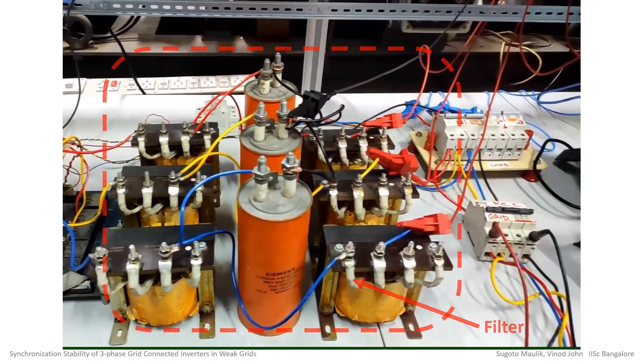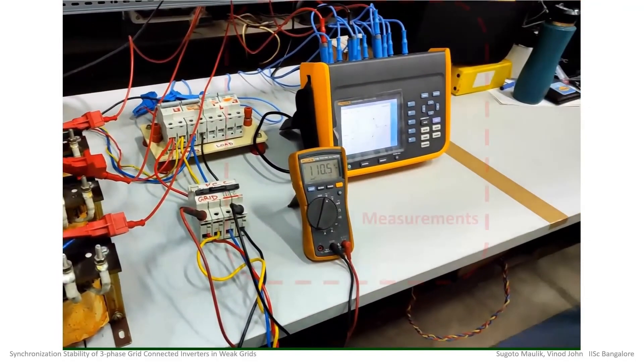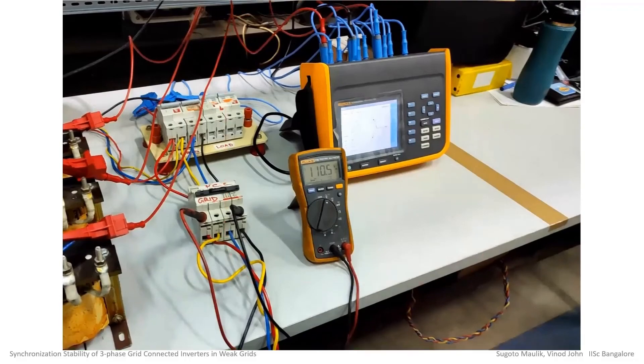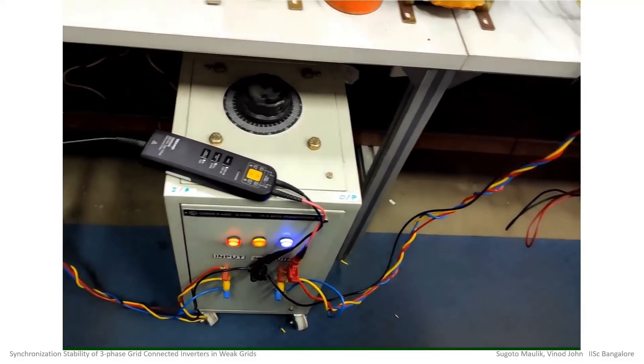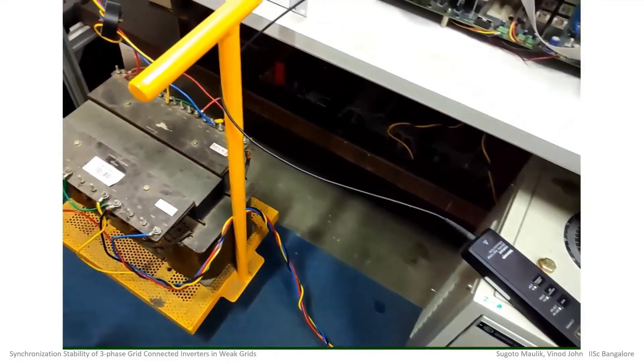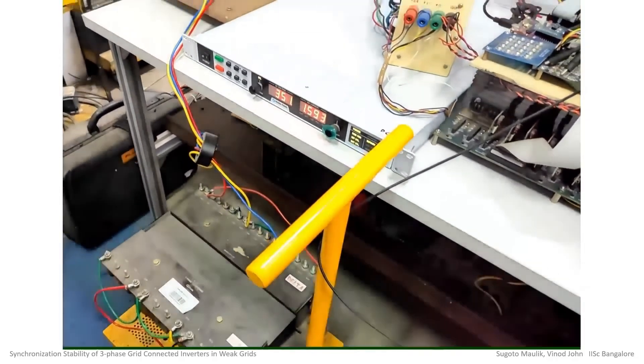An LCL filter is used at the converter output to reduce the harmonics. Oscilloscopes and power analyzers are used for measurement purposes. An autotransformer is used to vary the grid voltage. Finally, the converter's output power is fed to the grid via a transformer.